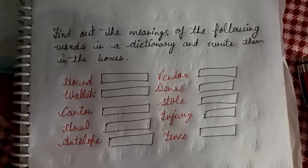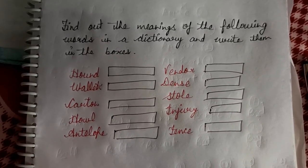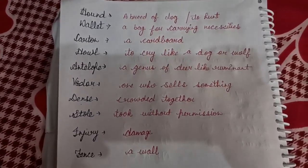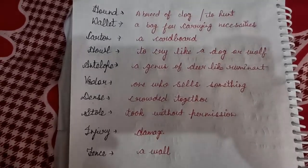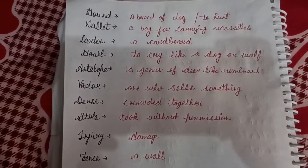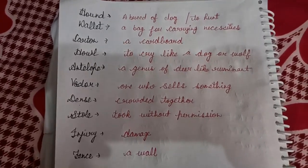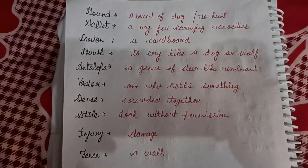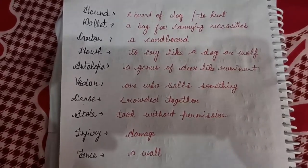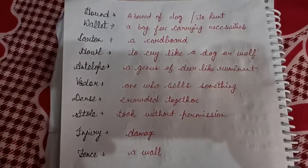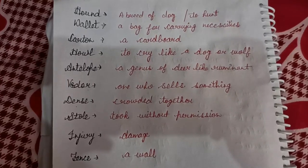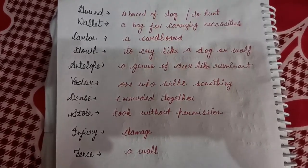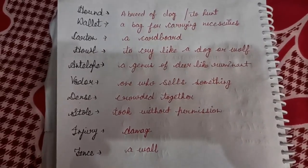Here is another exercise: find the meanings of the following words in a dictionary and write them in the boxes. The first word is 'hound' — a breed of dog that hunts. 'Wallet' — a bag for carrying necessities. 'Carton' — a cardboard box. 'Howl' — to cry like a dog or wolf. 'Antelope' — a genus of deer-like ruminant. 'Vendor' — one who sells something. 'Dense' — crowded together. 'Stole' — past tense of steal, meaning took without permission. 'Injury' — damage. 'Fence' — a wall or boundary.